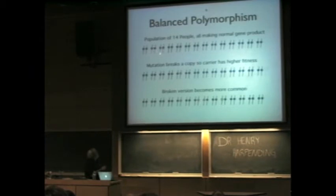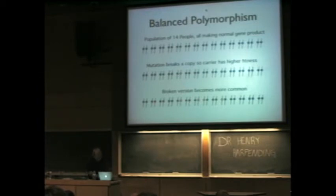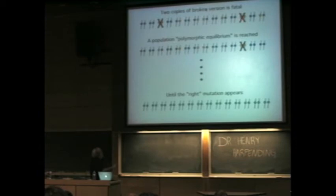Here is one chromosome in 14 people — we all have 23 pairs, so this is one pair in 14 people. They're all making a normal gene product. A mutation breaks a copy, so this carrier has higher fitness — this person has a lot more children. And pretty soon this gene has swept to a pretty high frequency. But pretty soon it gets so common that people show up with two copies of the broken version, and they lose — they have very low fitness. So the march of the mutant version stops the minute it starts showing up in two copies.